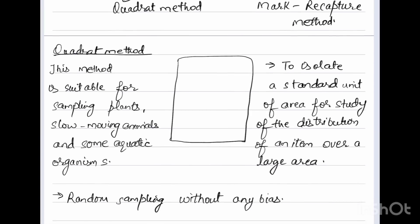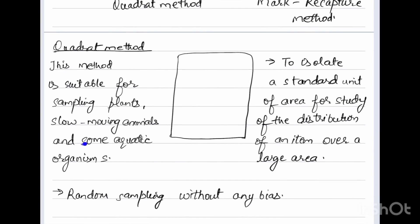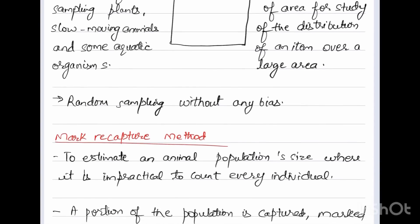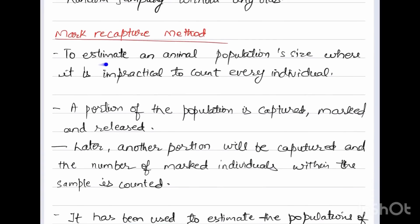The quadrat method is suitable for sampling plants, slow-moving animals, and some aquatic organisms also. To isolate a standard unit of area for study of the distribution of an item over a large area, random sampling happens without any bias. The next method is the mark-recapture method.